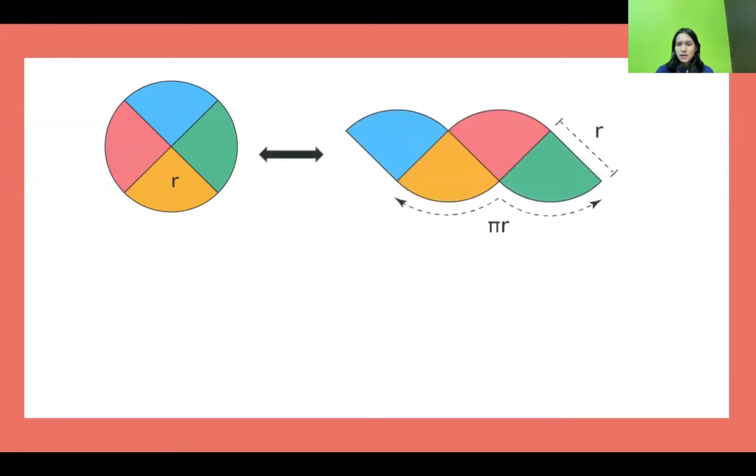So when we observe this picture, we can see that the circle is divided into four equal parts. And when we unfold the parts and reassemble it into something like this, then we can see we get a bare visual of parallelogram in our head.